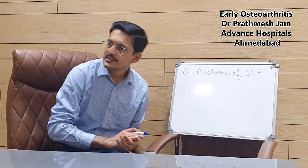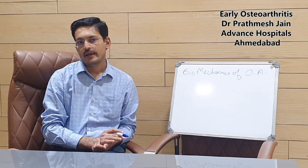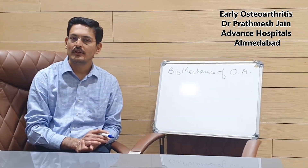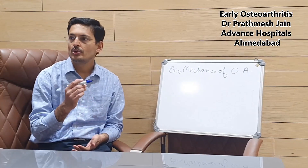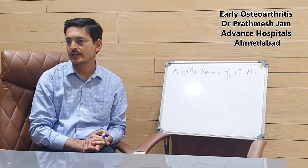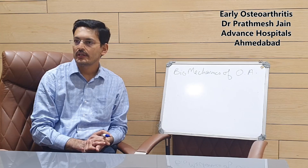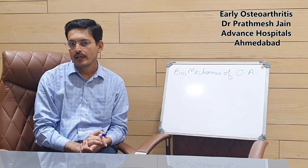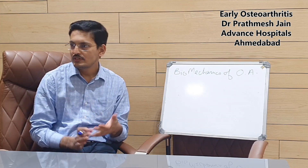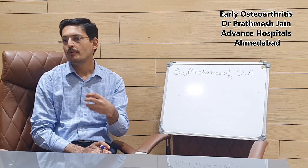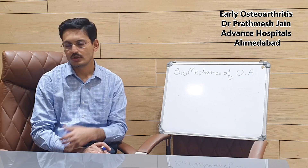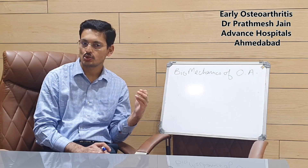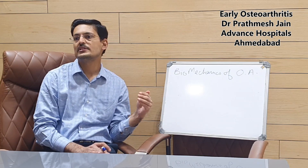Osteoarthritis is a progressive disease and the final answer to osteoarthritis is a knee replacement surgery. Previously, there was not a good understanding about the progress of osteoarthritis — why and how it progresses in a particular knee, and we could not do anything to protect the knee from progression. In today's talk, we will discuss why osteoarthritis occurs and how it progresses.